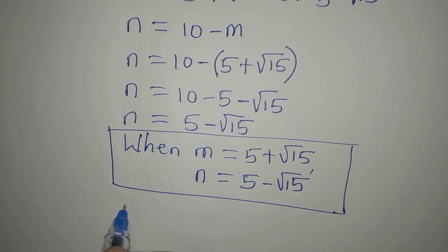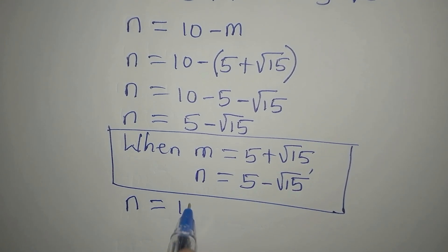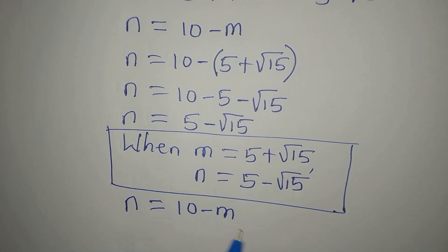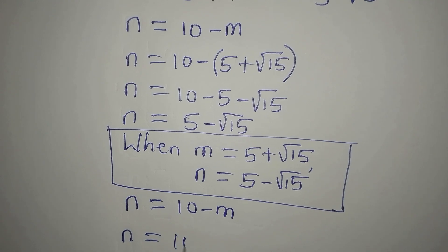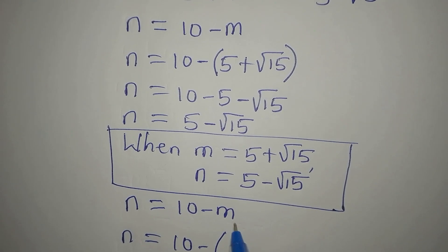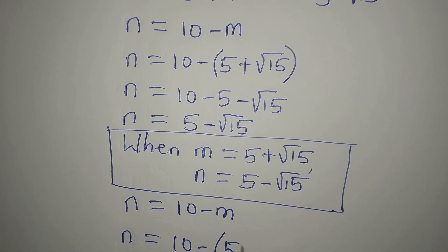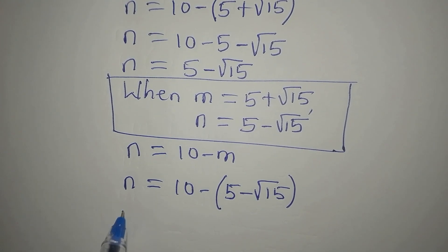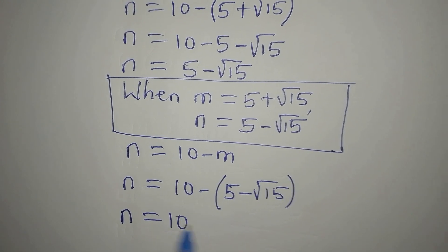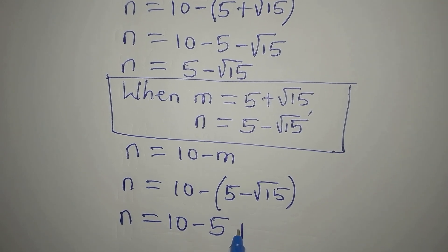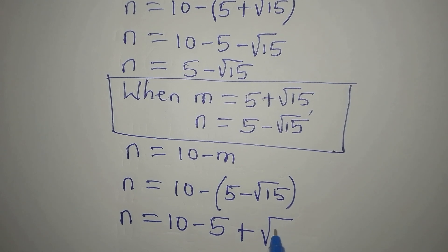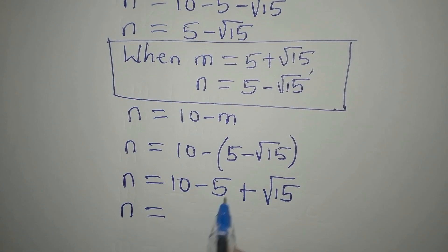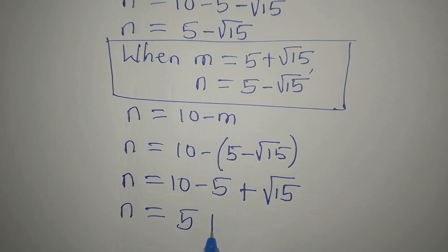Then our equation 3 is still n equals 10 minus m. So I will now go straight to the other value of m. So n will now be 10 minus, open bracket. The next value of m is 5 minus root of 15. So let's open this bracket again. So that n will be 10 minus 5. Negative negative will give positive here. Then we have root of 15. To go ahead, we have n equals 10 minus 5 is 5, then plus root of 15.